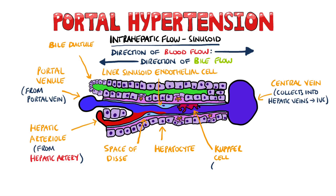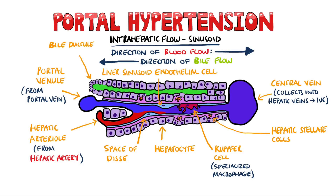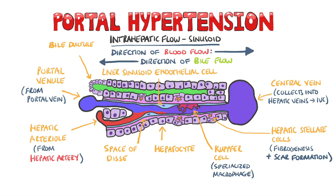The cell in red that you see inside the sinusoid is a Kupffer cell, a specialised type of macrophage that has scavenging and phagocytic activity. The orange star-shaped cells are important in portal hypertension and cirrhosis. These are hepatic stellate cells found in the space of Disse that are involved in fibrogenesis and scar formation in response to liver injury.